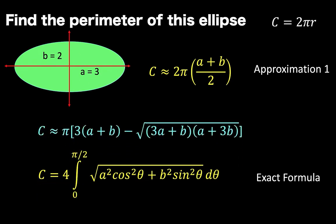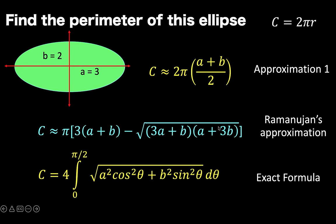Another formula that we can use to approximate the perimeter of an ellipse is Ramanujan's approximation: C is equal to pi times 3 times the quantity a plus b minus the square root of the quantity 3a plus b times the quantity a plus 3b. And of course, we also have the exact formula involving definite integration.